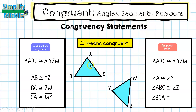Let's look at corresponding sides. This time we're relying on those hatch marks. Line segment GH has one hatch mark, so I look for one hatch mark on the other triangle: line segment ST or TS, both acceptable. Line segment GF has two hatch marks, so line segment TR or RT is its match. Line segment HF has three hatch marks, and line segment SR or RS would be the answer.